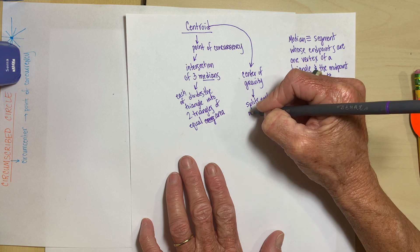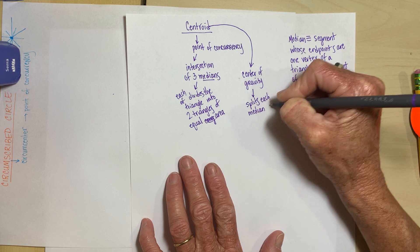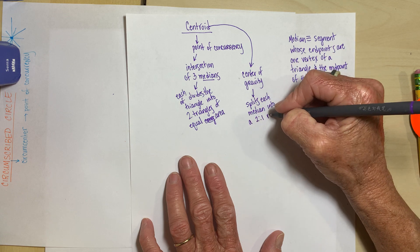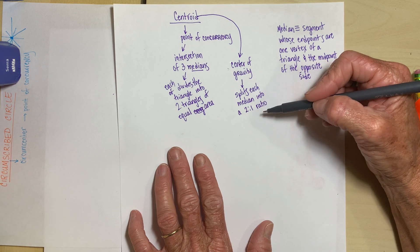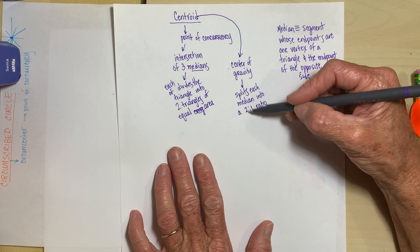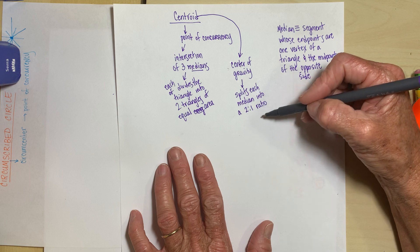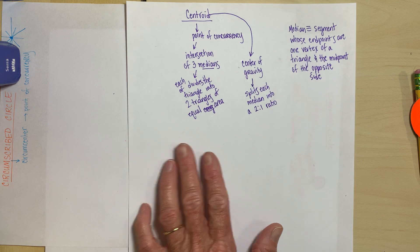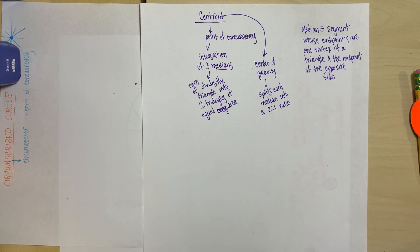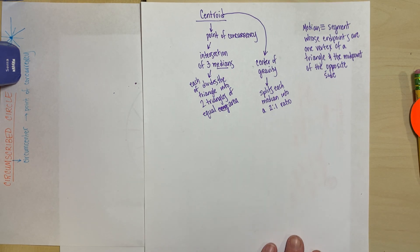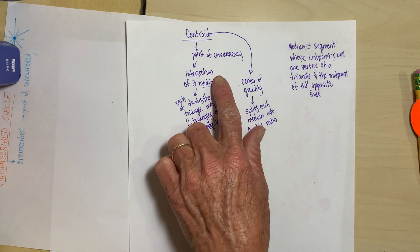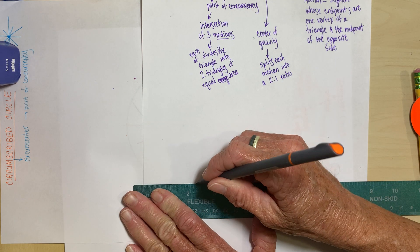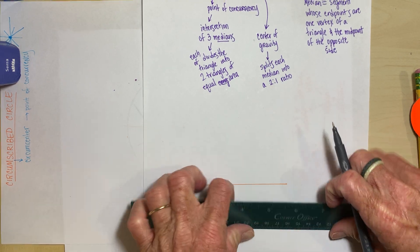Splits each median into a two to one ratio. And we know from our partitioning a line segment earlier in the year that two to one means there are going to be a total of three parts though. This is part to part, not part to whole. So let's go ahead and get started. So what do we need? We need a triangle if we're going to find its centroid. So might as well stick with the theme I have going and I'll start with once again, kind of the same type of triangle.